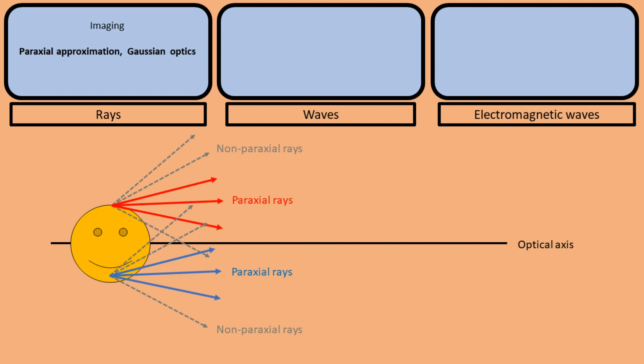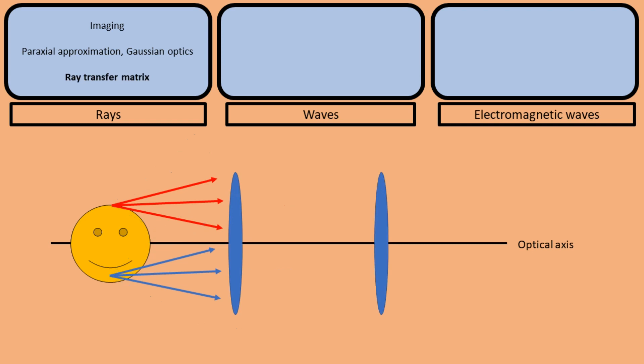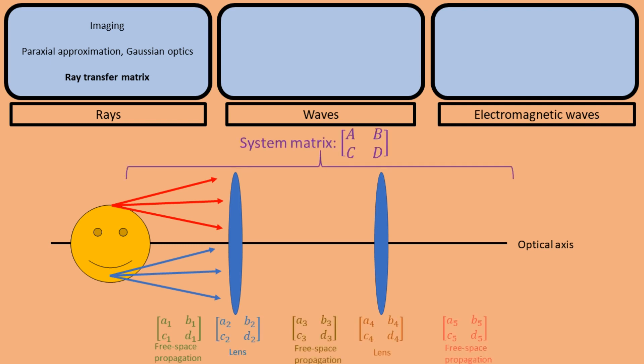For example, in the paraxial approximation, it becomes easier to describe optical systems consisting of many components. By describing each optical element as a 2x2 matrix, the entire system is then described in one matrix which is found by multiplying the matrices of all its components. From this system matrix, one can find important information about the imaging system, such as its front and back focal plane, its imaging condition, so the relation between the object plane and image plane, and its magnification.